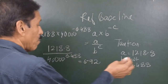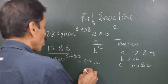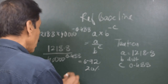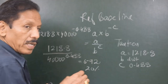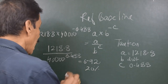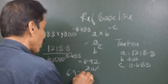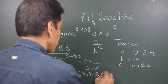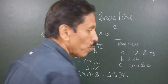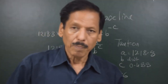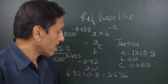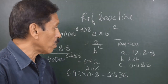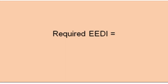Now suppose we are in a phase where the reduction factor to be applied is 20%. To find the required EEDI, we multiply the baseline figure of 6.92 by 0.8, giving 5.536. So 5.536 grams of CO2 per capacity mile is the required EEDI. The values of A, B, and C are found from tables, and the reduction factor is also provided in those tables.